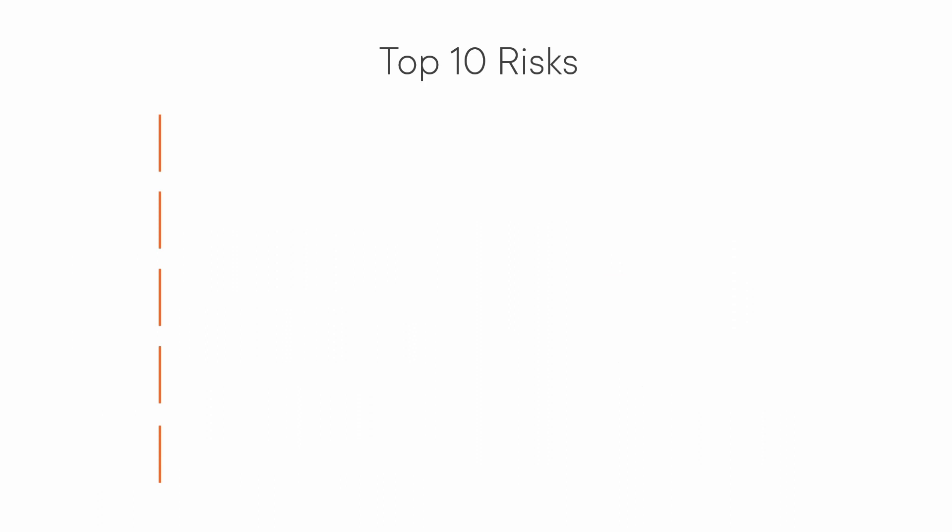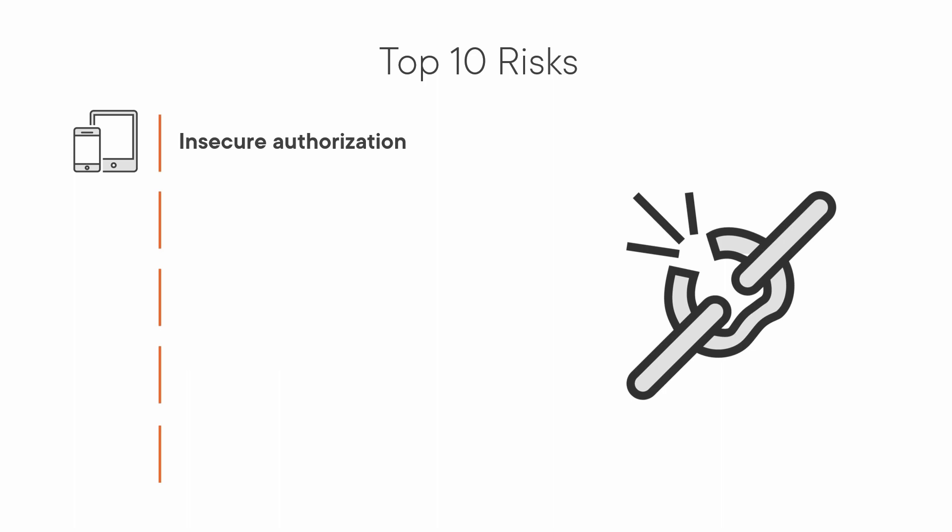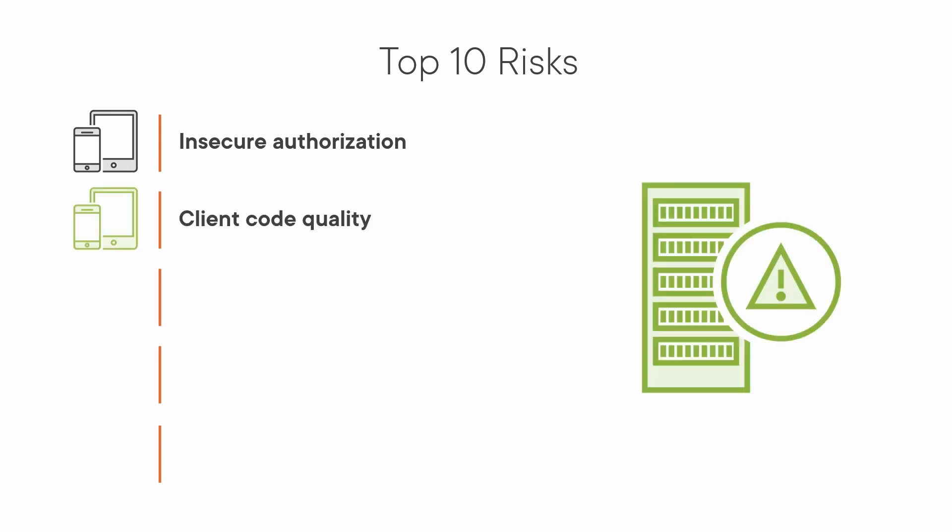We then have M6: Insecure Authorization. Insecure authorization exposes data, allows attackers to perform actions as authenticated users, and facilitates attacks such as insecure direct object reference. Then we have M7: Client Code Quality. Mobile app client code should never be trusted.